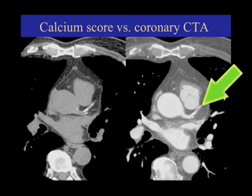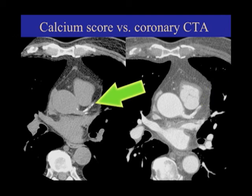You can see how you can really see the inside of that vessel much better here than you can here. This is actually the same patient, at exactly the same level. This dense stuff — when you don't give contrast, the densest, whitest thing you see is calcium.